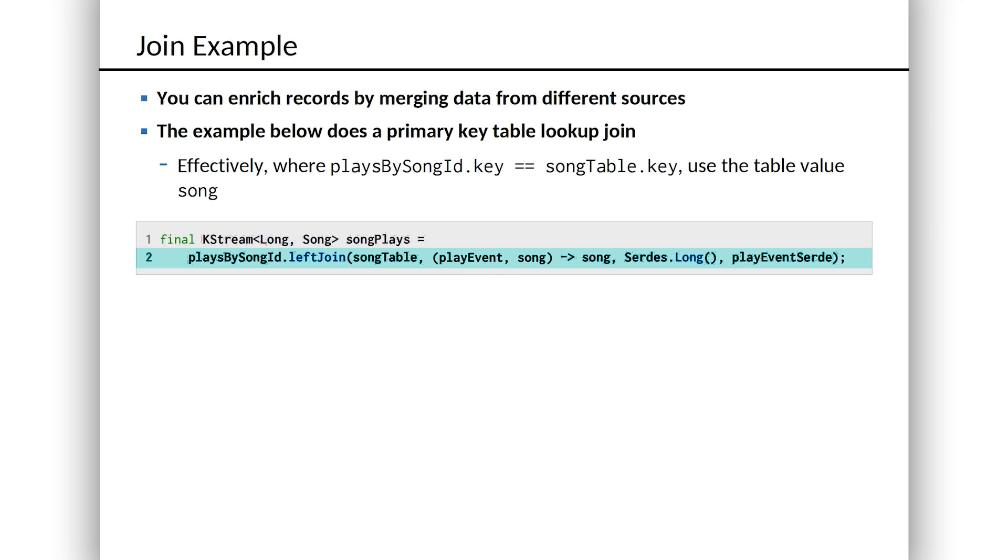We're calling left join and passing four things into it. The first one is song table. This is that song table is a K table that I've created from a stream of song updates elsewhere. Not showing you all the details of how these things work. What's important is we have a stream, we have a table, we want to join them, we call left join. The first thing we pass in is the name of the table we want to join to. And this will join on key.